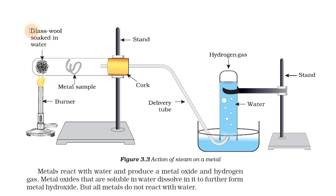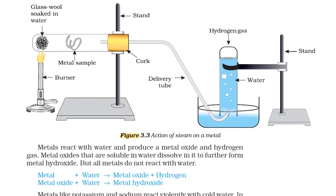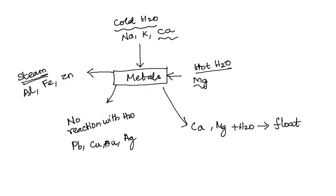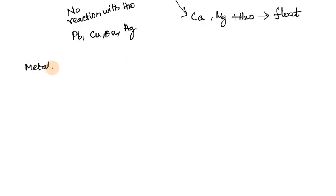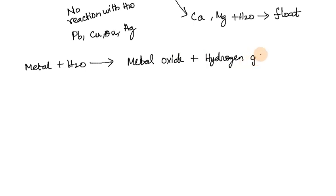For the steam reaction, here is a test tube set up with glass wool soaked in water placed horizontally. When heat is applied, steam is generated. The metal sample is placed in the tube. The metal reacts with the steam, and the gas produced is hydrogen.